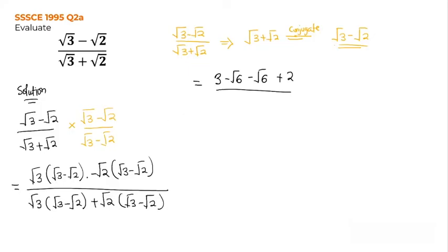For the denominator: root 3 multiplied by root 3 gives root 9, which equals 3. Then root 3 multiplied by negative root 2 gives negative root 6. Positive root 2 multiplied by positive root 3 gives positive root 6. And root 2 multiplied by negative root 2 gives negative 2.